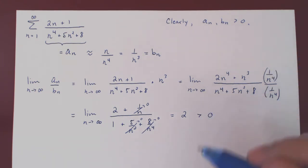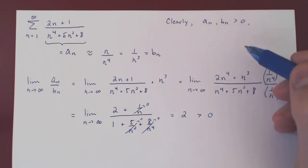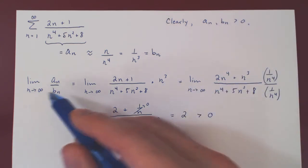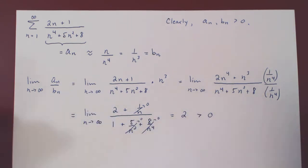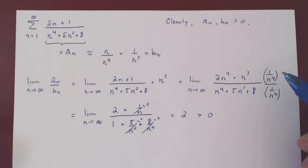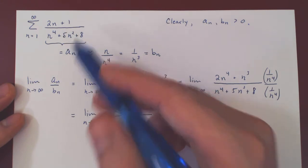So both conditions of the limit comparison test are met. Our two sequences are strictly positive. And in the limit, AN over BN approaches 2. And let's see now, we don't even have to remember the conclusion of the limit comparison test. If we understand the intuition, we can simply reapply it and obtain that this series converges very intuitively.